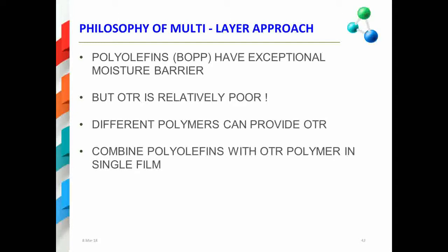In general, the philosophy behind the multi-layer approach is that polyolefins such as BOPP, or biaxially oriented polypropylene, have very good moisture barrier properties, but at the same time the OTR provided by these polymers — be it polypropylene or polyethylene — is relatively poor.